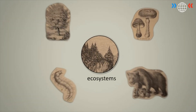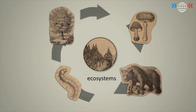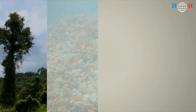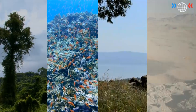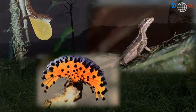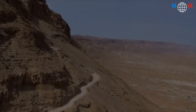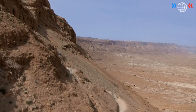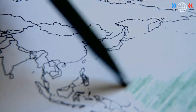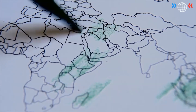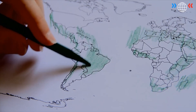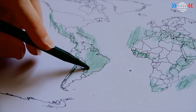Diversity happens within ecosystems. These are the places where plants and animals live together. An ecosystem can be a forest, a coral reef, a lake or even a desert. Some ecosystems are very diverse and host high numbers of different species. Others offer tough living conditions resulting in a low level of biodiversity. Scientists call places rich in diversity hotspots — ecosystems where life-friendly climate conditions created an outstandingly high level of biodiversity.